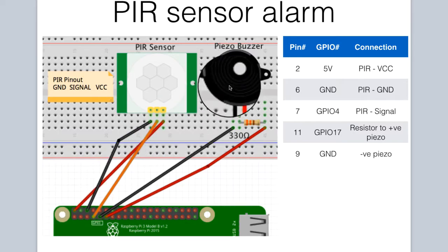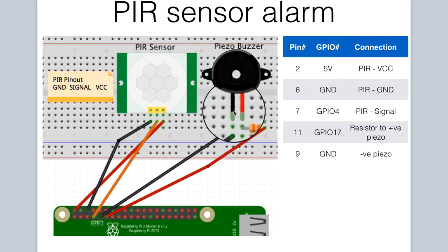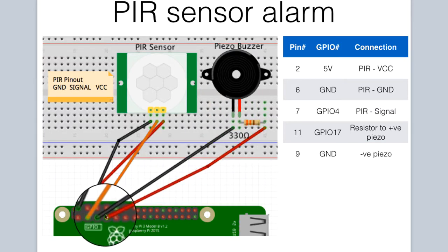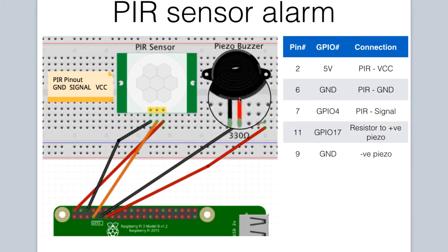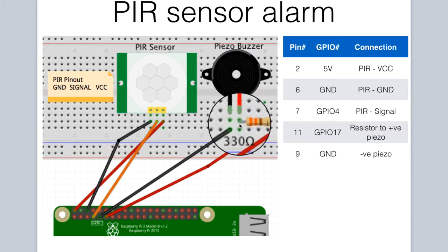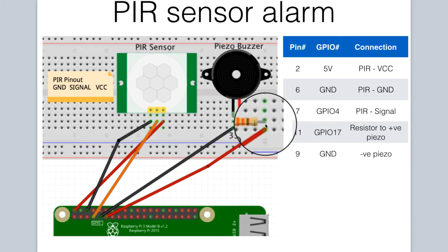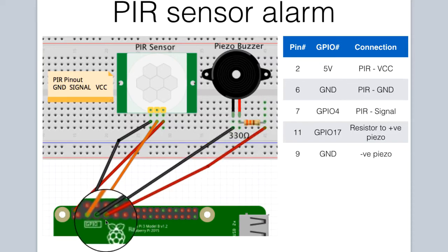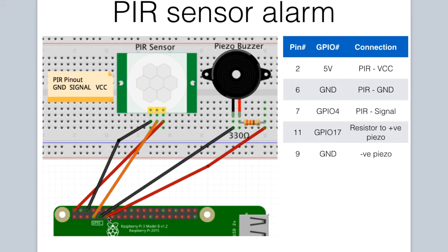For our Piezo buzzer, the negative pin is connected to ground at pin 9 on the Raspberry Pi. The positive pin is connected to a 330-ohm resistor, and the other end of that resistor is connected to pin 11 on the Raspberry Pi. Those are all the connections together — five connections to the Raspberry Pi, fairly simple. Let's proceed to see how we wire all of this up.